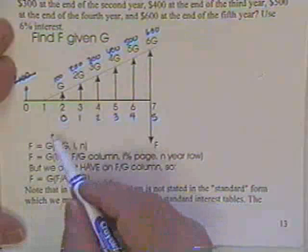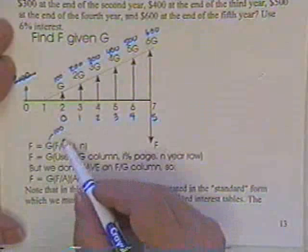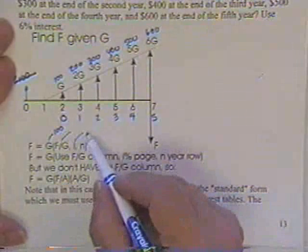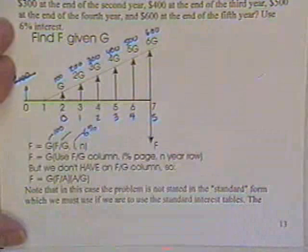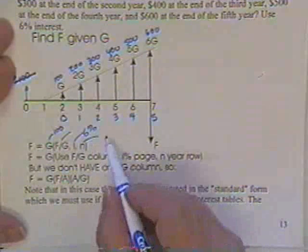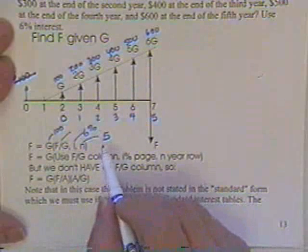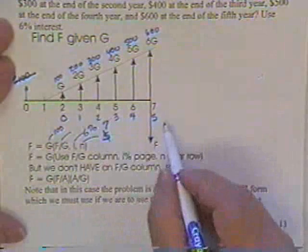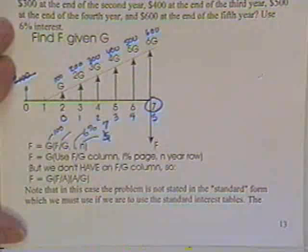And therefore you would use G would be 100, that's okay. You'd use the F over G table, that's okay. You'd use the 6% interest table. But then N for use in the tables is not 5, as I'm sure the answer will be in there. You can be pretty sure that answer would be one of the ones listed. You'll have to use 7 because that's what we have agreed in the derivation of the tables.